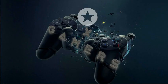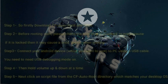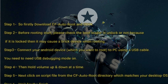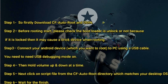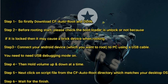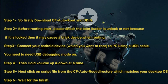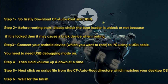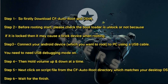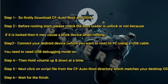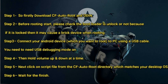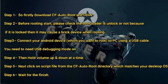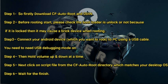Step 1: Download CF Auto Root and Odin. Step 2: Before rooting, please check if the bootloader is unlocked or not, because if it is locked it may cause a bricked device when rooting. Step 3: Connect your Android device to the PC using a USB cable — you need to enable USB debugging mode. Step 4: Then hold volume up and down at the same time.